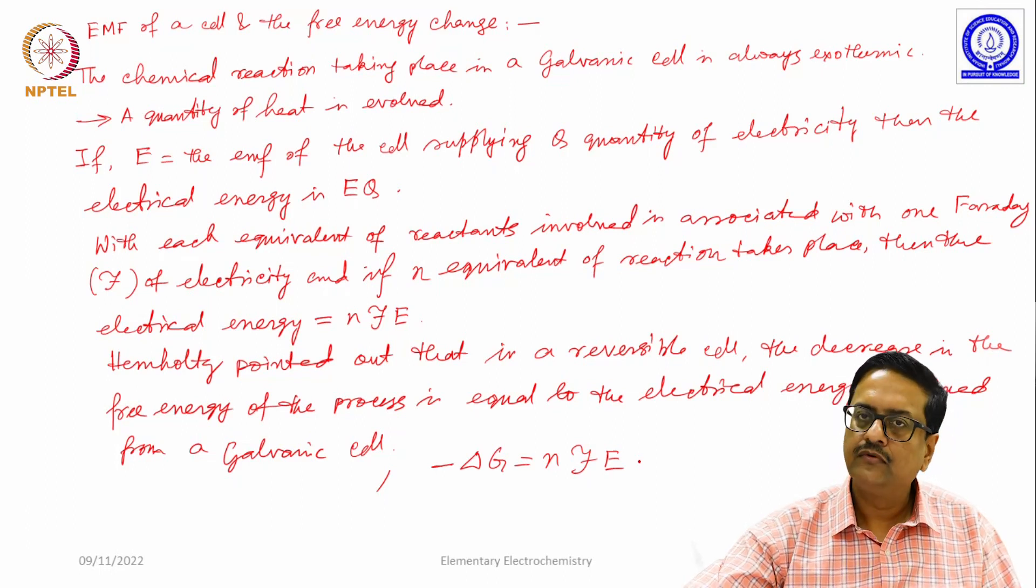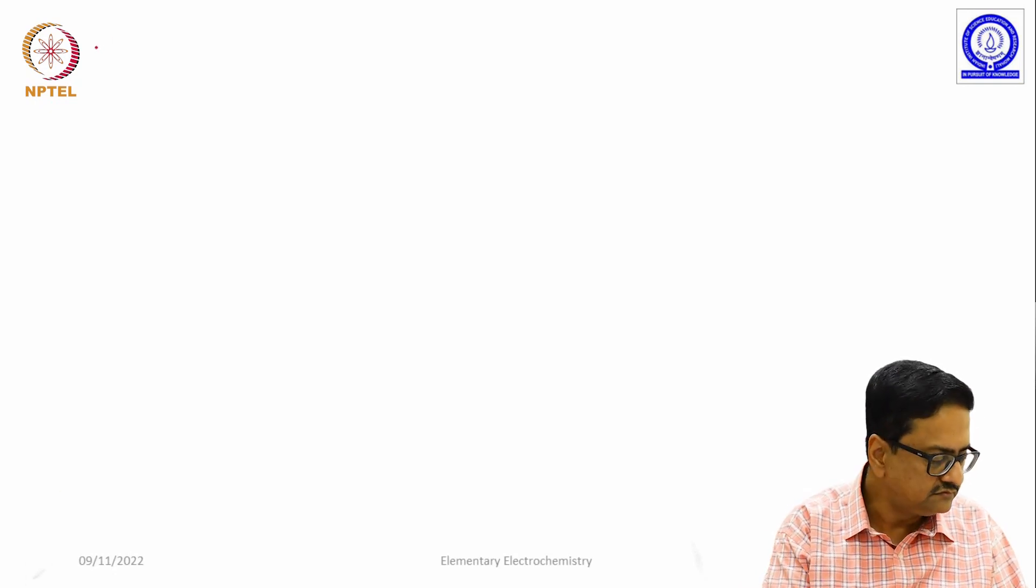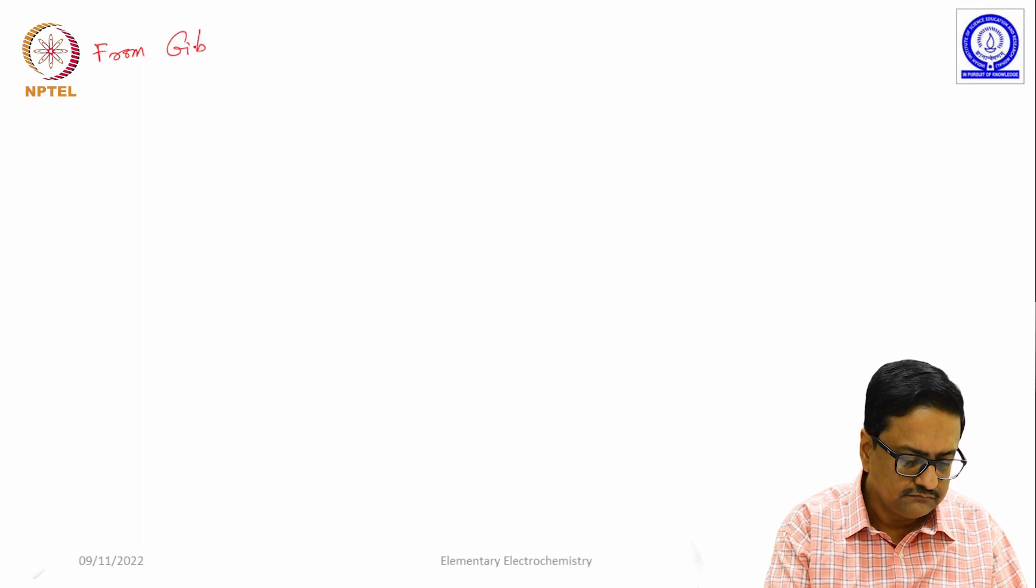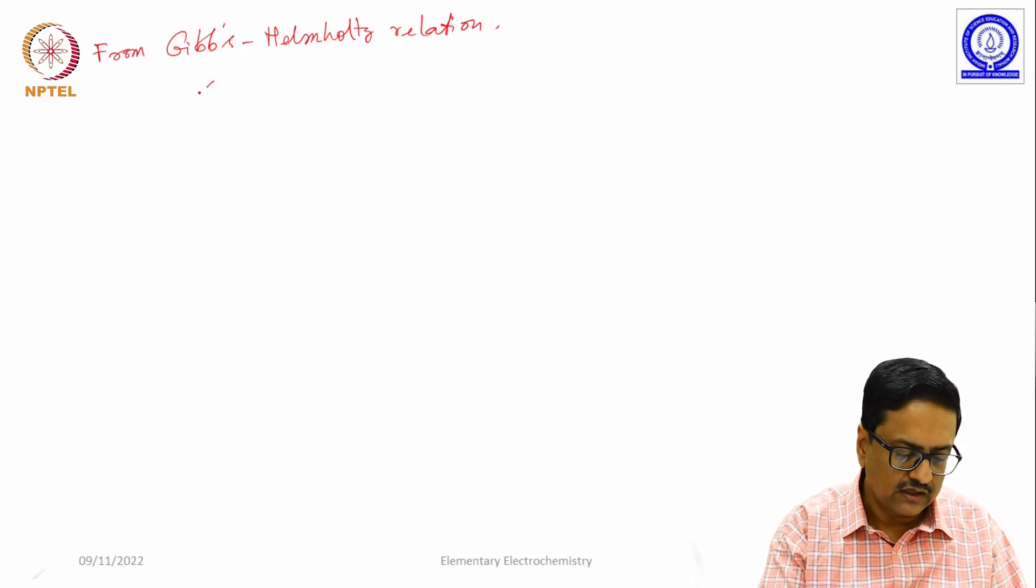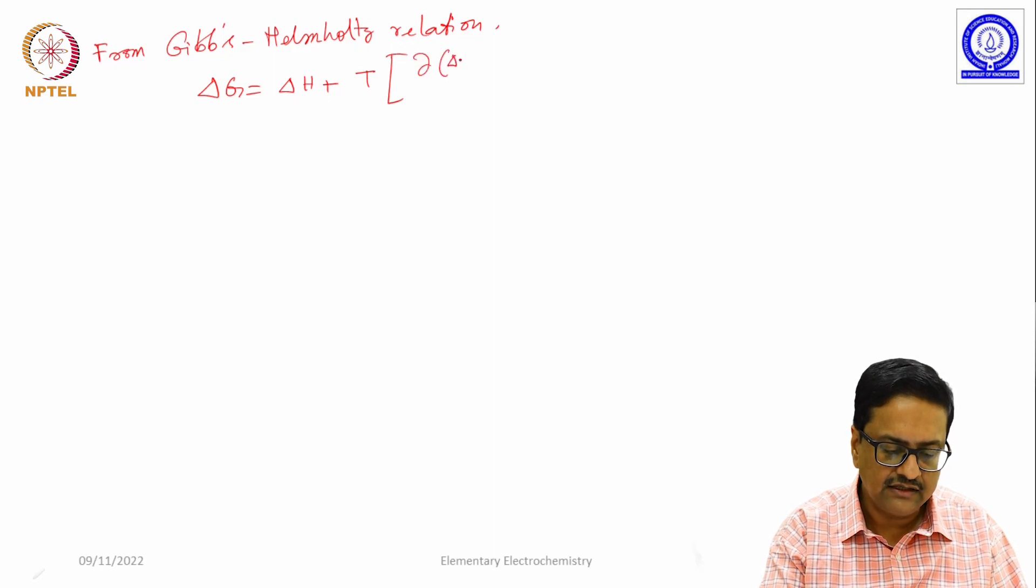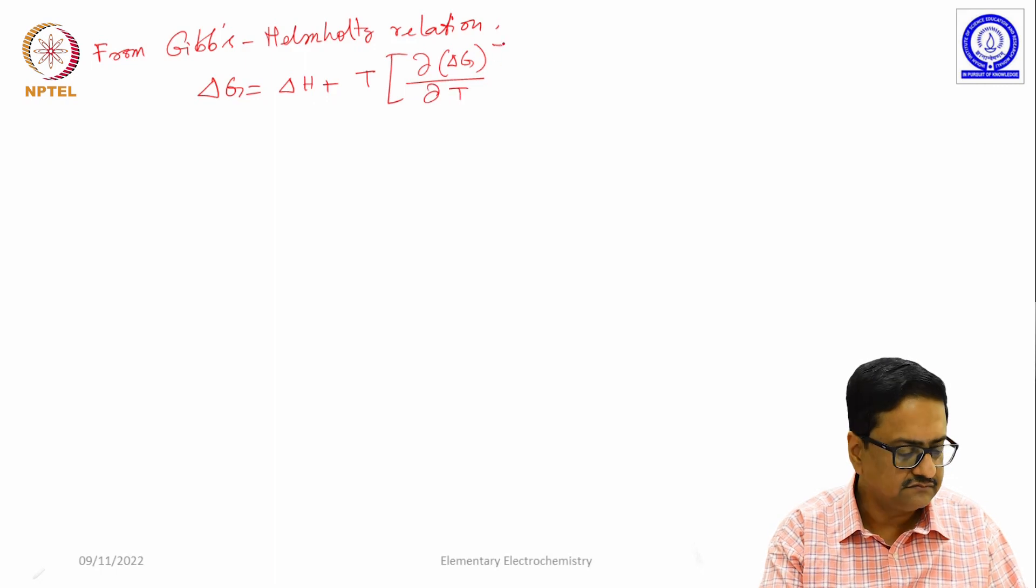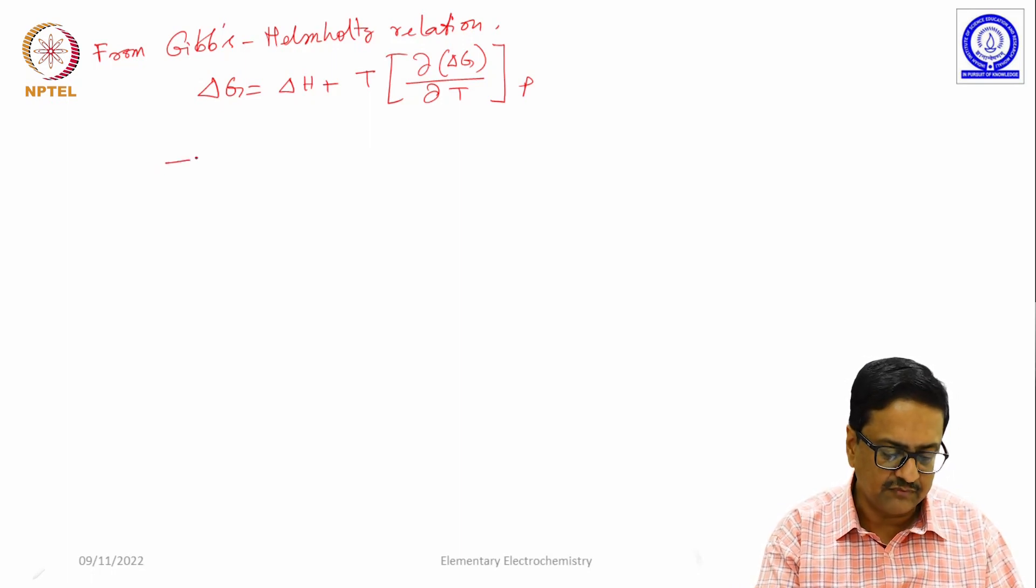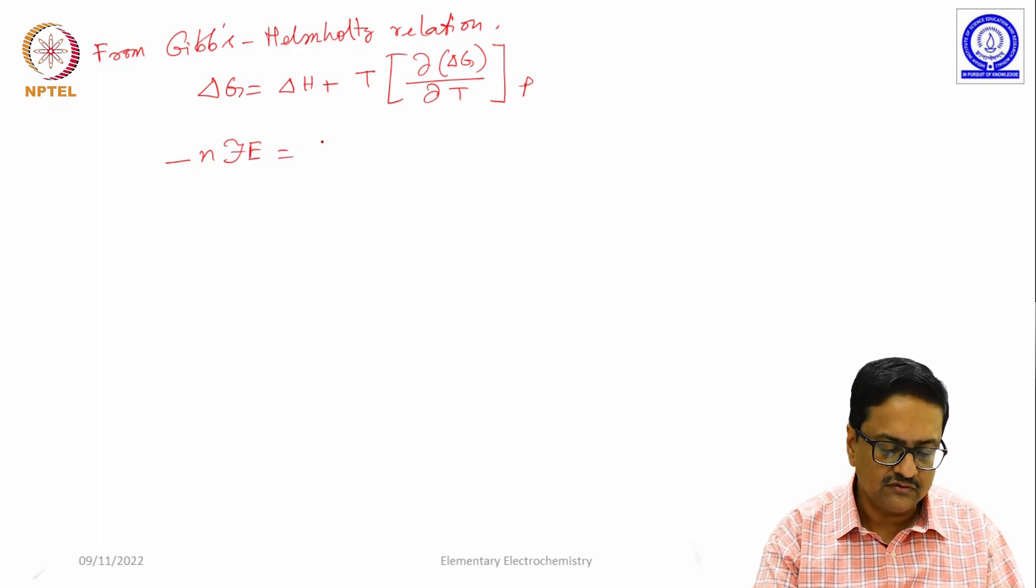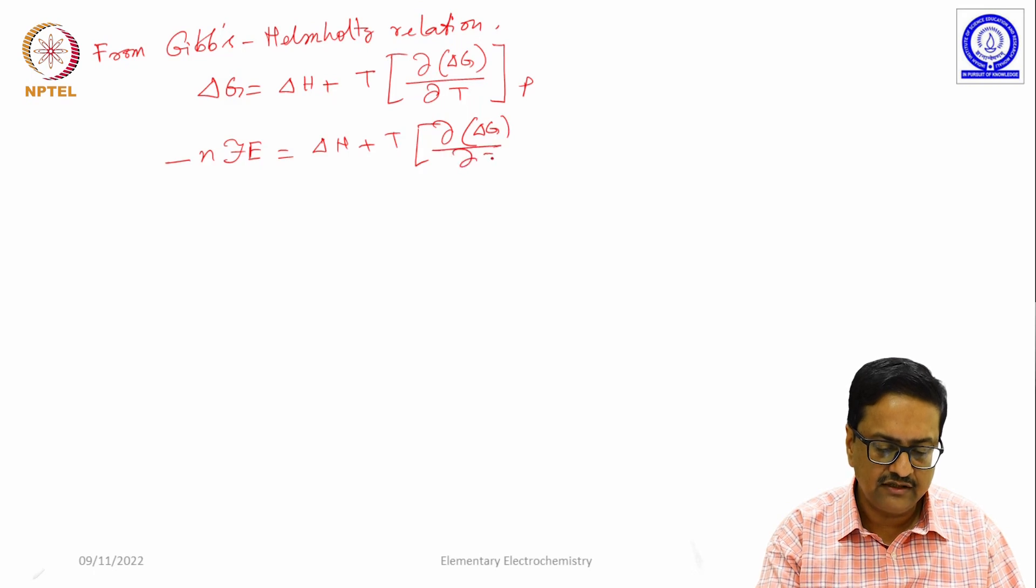From our knowledge of basic thermodynamics, we know from Gibbs-Helmholtz relation, delta G is equal to delta H plus T del delta G del T at constant pressure p. We replace this delta G by minus N F E, which is equal to delta H plus T del delta G del T p.